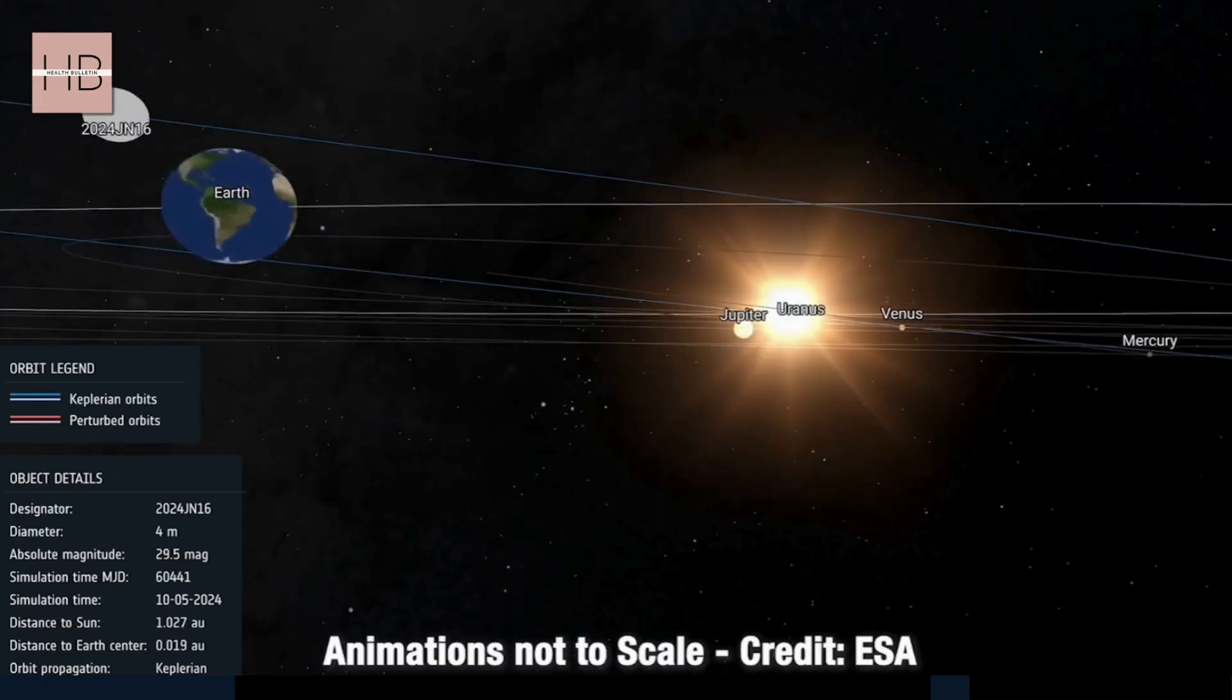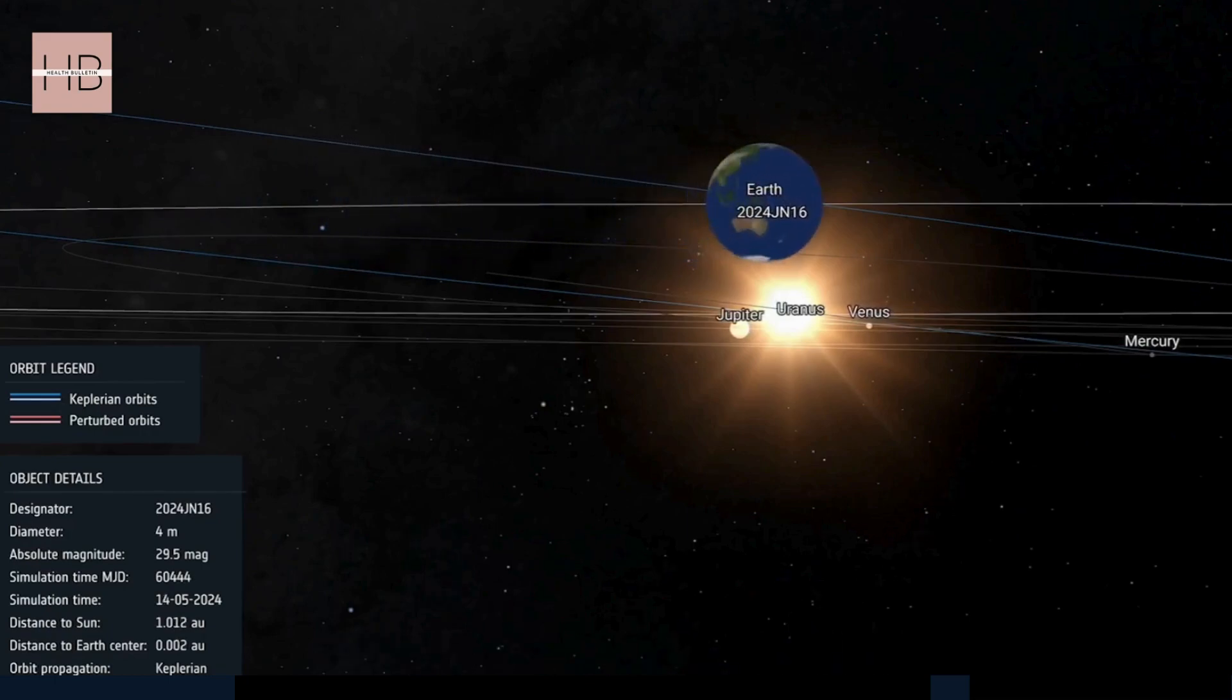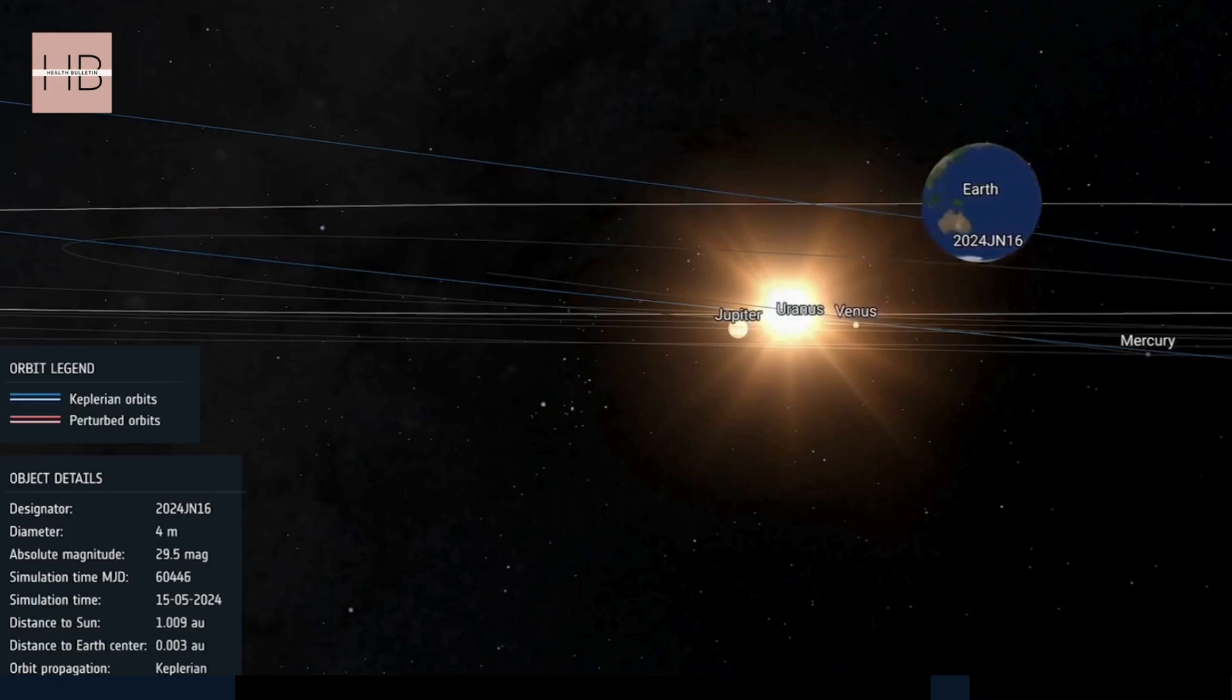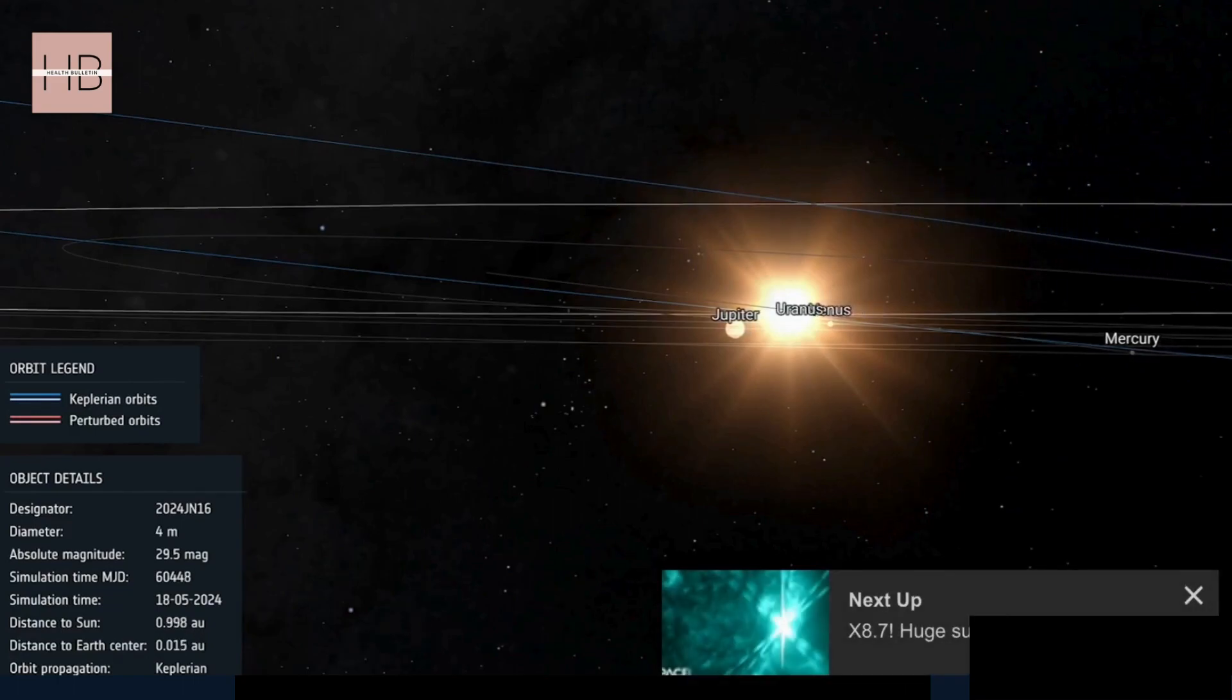While the prospect sounds alarming, NASA assures us that asteroids capable of causing a global disaster are extremely rare. These would need to be about a kilometre or more in diameter and impact the Earth only once every 100,000 years on average.